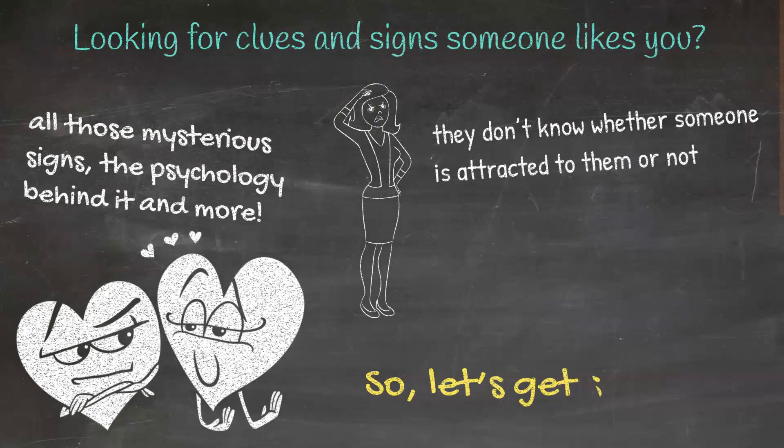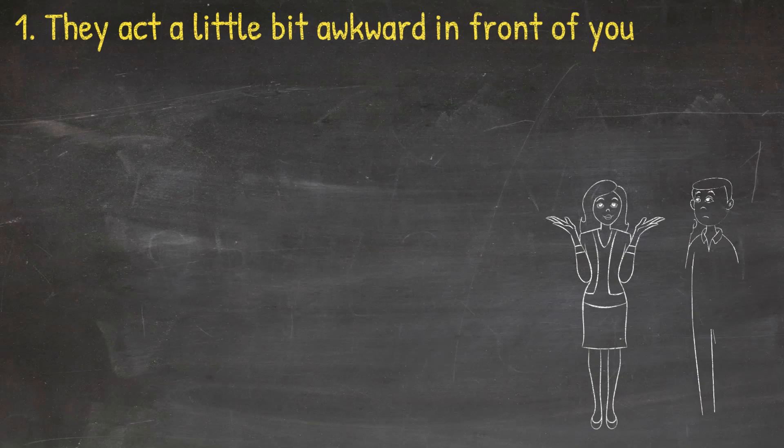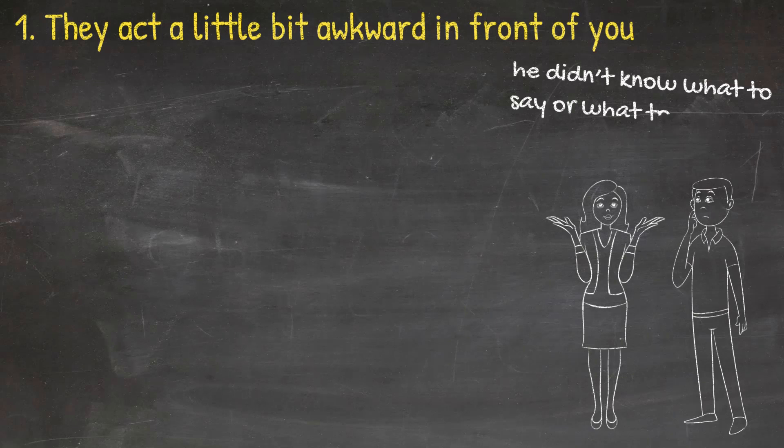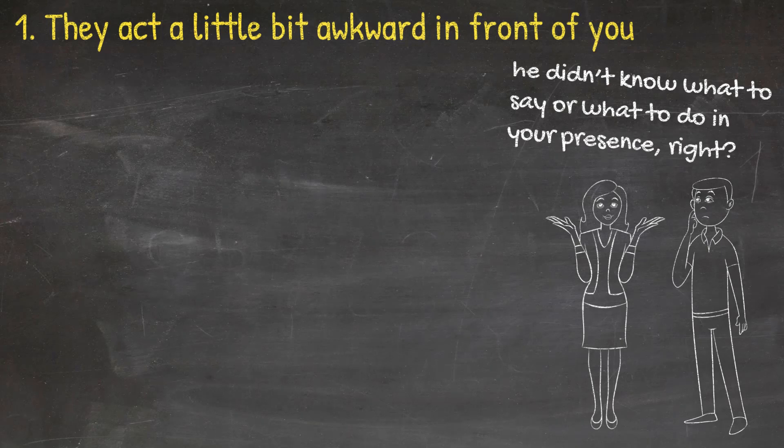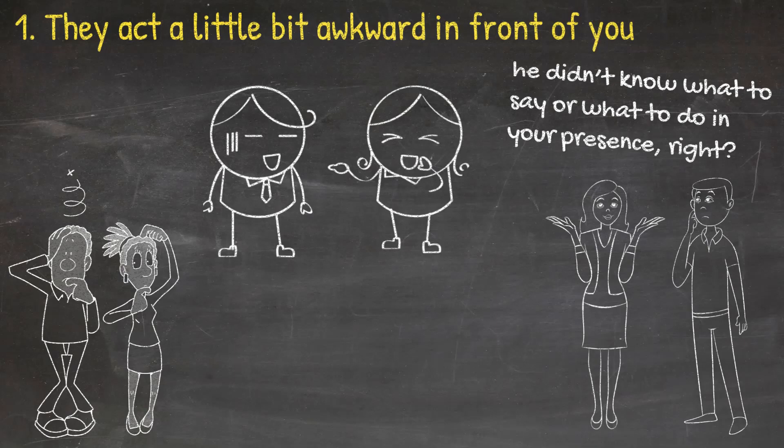So let's get started. One: They act a little bit awkward in front of you. Have you ever had a situation where a boy who liked you acted pretty awkward when he was with you? It looked like he didn't know what to say or what to do in your presence, right? Well, that is because he liked you and it was very hard for him to act normally in front of you. He wanted to represent himself in the best possible light, but unfortunately it didn't work out well. This situation will happen every time someone likes you but won't admit it.